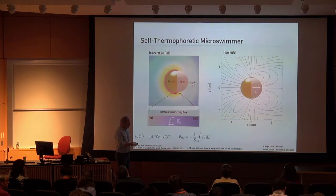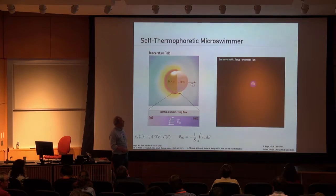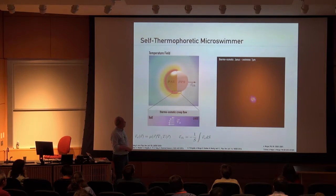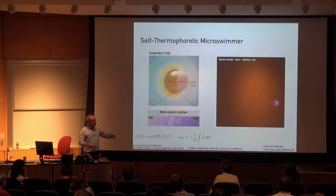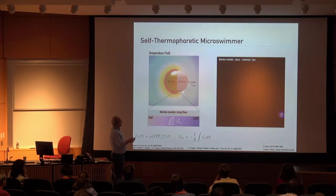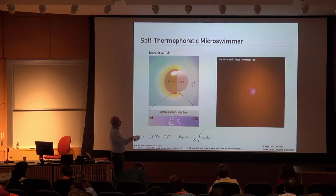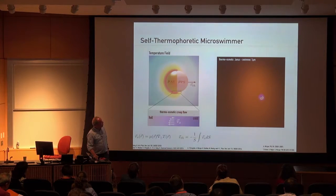So that was all calculations so far. The experiment looks like this — a dark field microscopy image. The bright side you see is the gold side, and the darker side is the polymer side. The polymer side is always in front, because the thermo-osmotic flow goes from cold to hot, and therefore the particle has to move to the other side. We like this swimmer because we can control it and understand it pretty well.